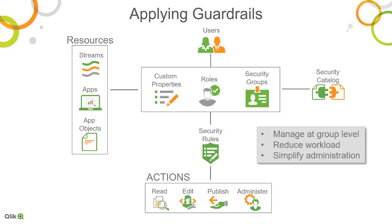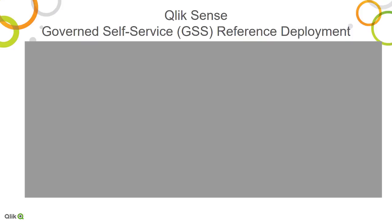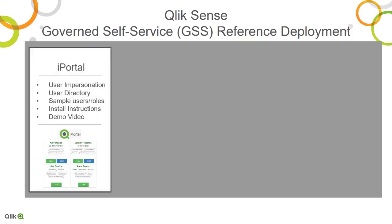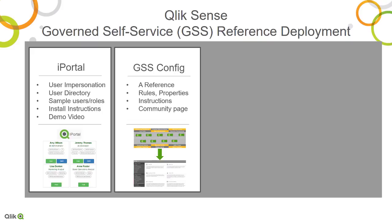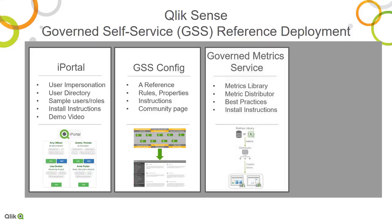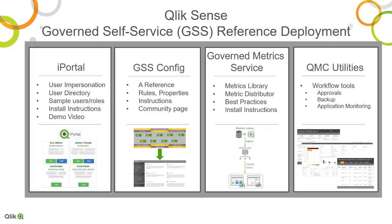Now that we know who is going to use the system and how they are going to be governed, let's take a look at what is available as a reference to learn and practice Qlik Governed Self-Service. The Qlik Sense Governed Self-Service reference deployment is a deployable example of the framework we are discussing today. The GSS comprises four components to kickstart your journey: the iPortal impersonation interface for testing security rule implementation, the GSS configuration providing best-practice template rules, the Governed Metrics Service — a REST API connecting to your central repository of dimensions and measures to deliver metrics to all Qlik Sense applications — and the QMC Utilities, a set of tools to help manage application lifecycle, multi-developer workflows, and administrative enhancements to the QMC.